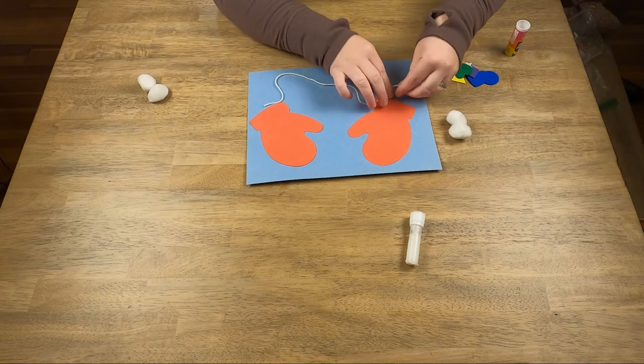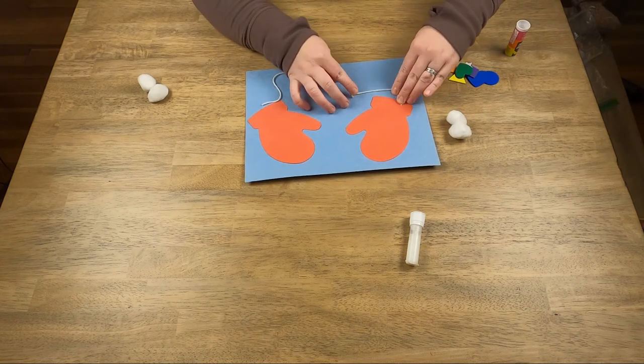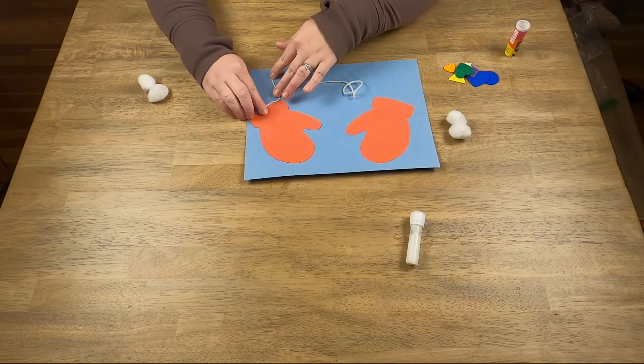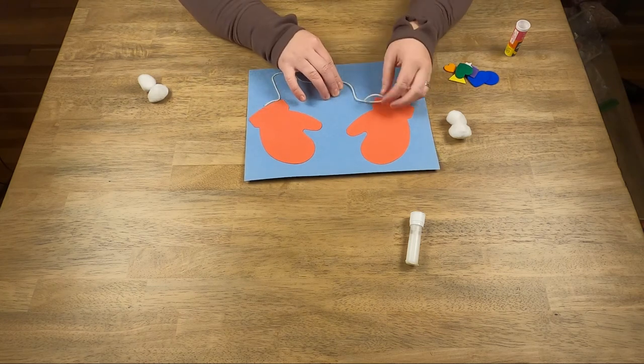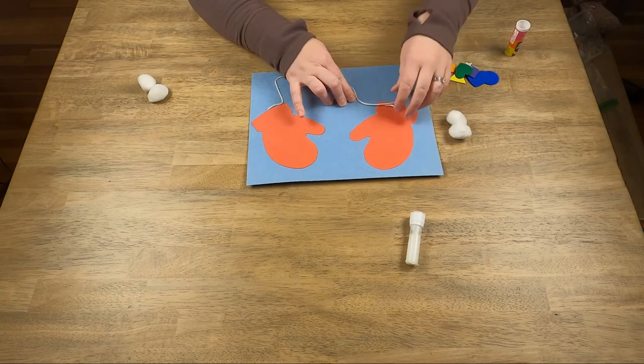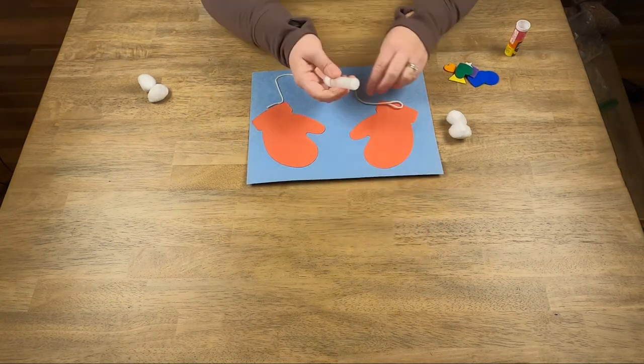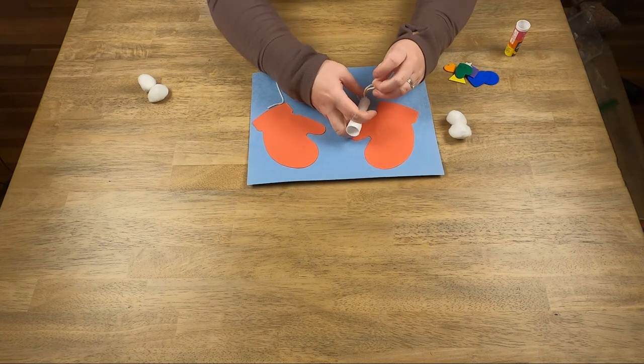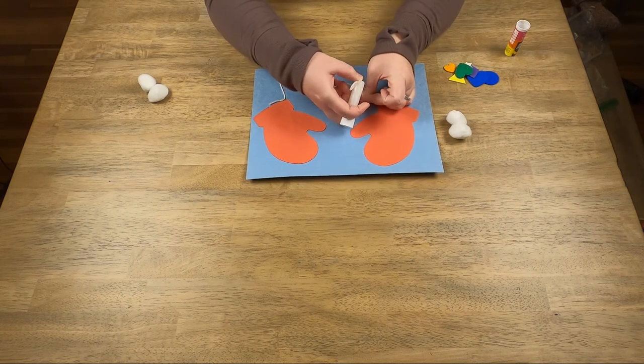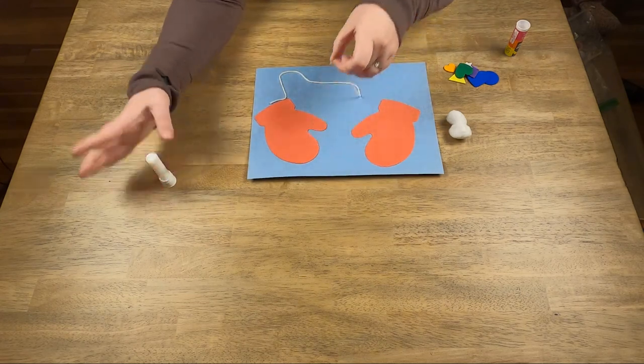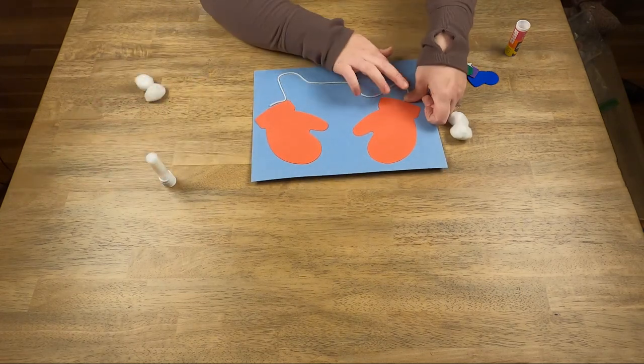Oops. And then using your finger, you stick it down to the paper in any design you want. Sometimes you'll have ends that don't have enough glue on it. This side is sticking nice to it, but this end isn't. So I'm just gonna add a little bit more glue to the string and then connect it to my other mitten.